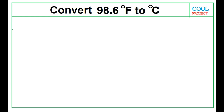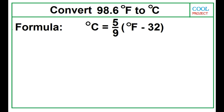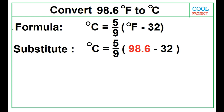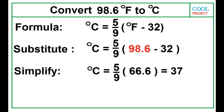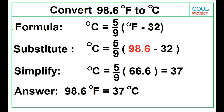Convert 98.6 degrees Fahrenheit to degrees Celsius. The formula is degree Celsius is equal to 5 over 9 times the quantity degree Fahrenheit minus 32. Substitute the given value, which is 98.6 degrees Fahrenheit. Find the difference of 98.6 and 32 before multiplying by 5 over 9. Degree Celsius is equal to 5 over 9 times 66.6. This is equal to 37. The answer is 98.6 degrees Fahrenheit is equal to 37 degrees Celsius.